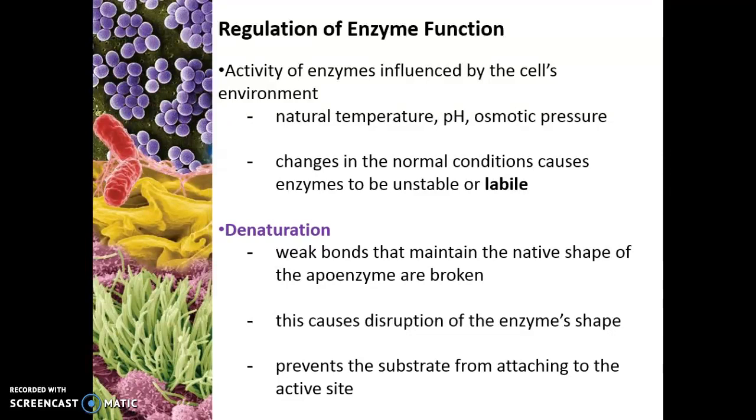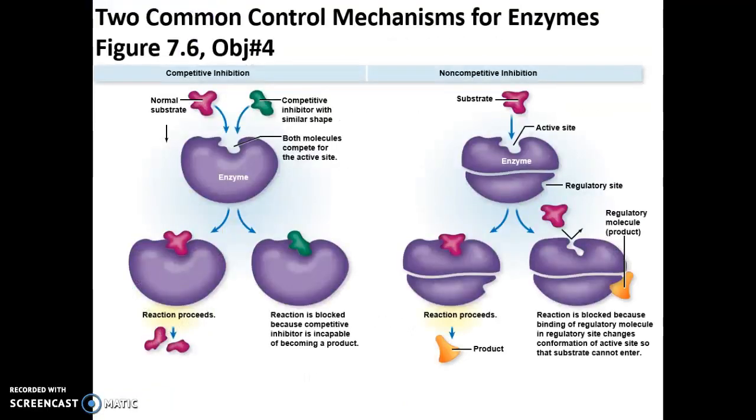Now denaturation, that is when the weak bonds that maintain the normal or native shape of the apoenzyme are broken. All right, breaking those bonds disrupts the enzyme shape and that prevents the substrate from attaching to the active site and therefore inhibiting the reaction.